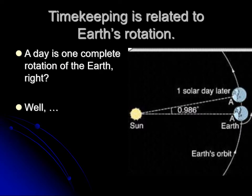One day is one rotation of the Earth, so a day is when the sun is high in the sky until it's high in the sky again — noon to noon. But it's a little more complicated than that. If you look directly overhead, you see the sun. 24 hours later, Earth has made one complete rotation, but it has also moved, so directly overhead you don't see the sun — you see empty space. You have to turn almost a degree more, 0.986 degrees, to point back at the sun.